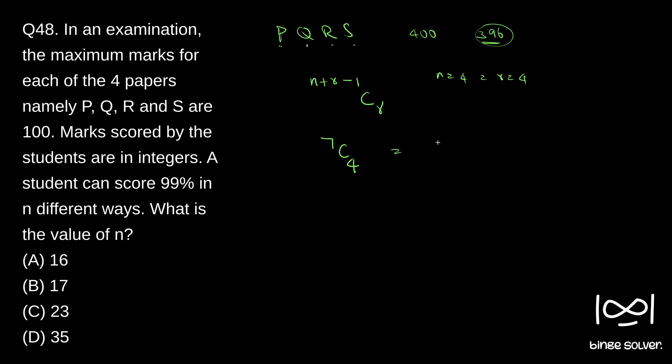So we get 7 C 4 which is 7 into 6 into 5 into 4 by 4 into 3 into 2. So 4 gets cancelled, 3, 2 gets cancelled with 6. So 7 into 5 which is 35. So we get our answer straight away as 35.